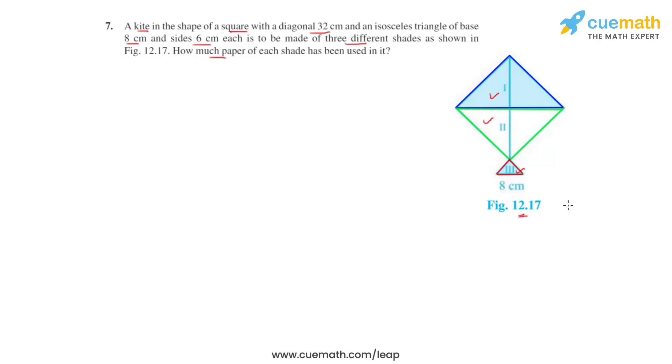Now the upper region, that is region 1 plus region 2, is in the shape of a square with diagonal 32 centimeters. Let's write 32 centimeters here. As it is a square, let each of its sides be a, and this angle will be equal to 90 degrees. So we can apply Pythagoras theorem to the triangle which is highlighted.